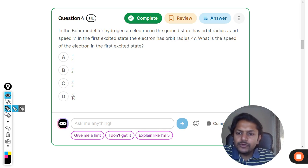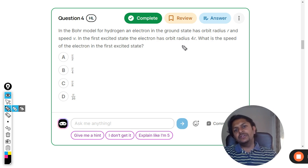Okay dear students, let's see what is there in this question. In the Bohr model of hydrogen, an electron in the ground state has orbit radius r and speed v. In the first excited state, the electron orbit becomes 4r. What is the speed of the electron in the first excited state?